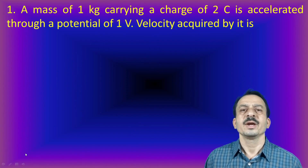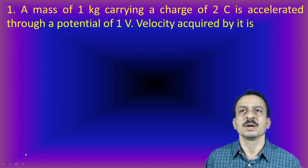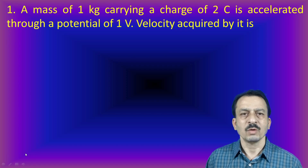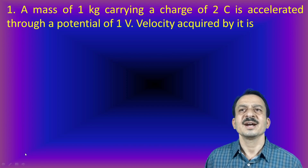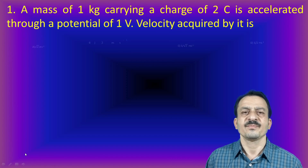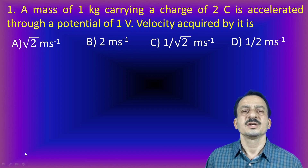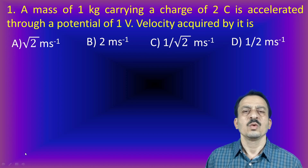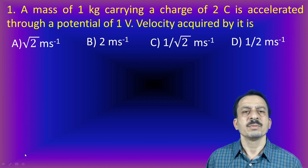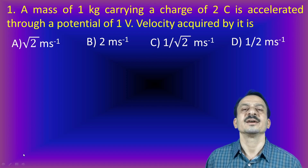The first problem: a mass of 1 kg carrying a charge of 2 coulomb is accelerated through a potential of 1 volt. The velocity acquired by it is — options: A, root 2 meter per second; B, 2 meter per second; C, 1 by root 2 meter per second; and D, 1 by 2 meter per second.